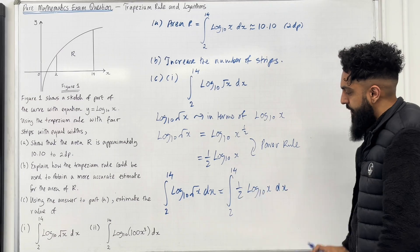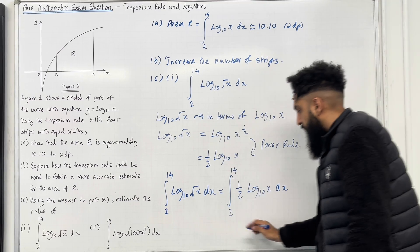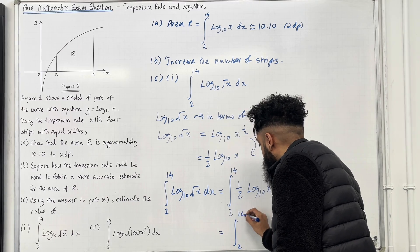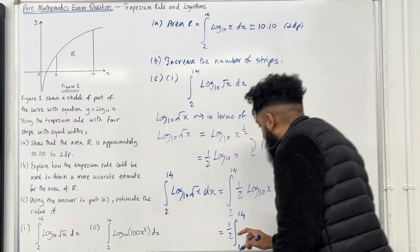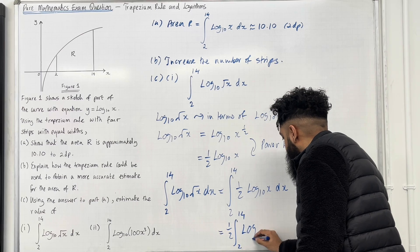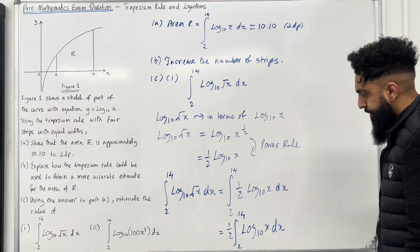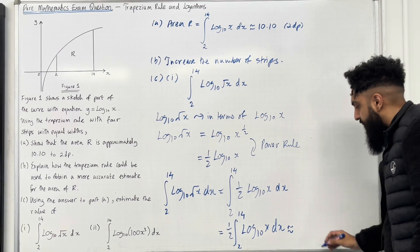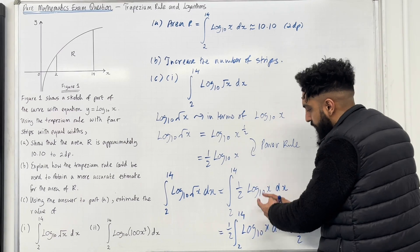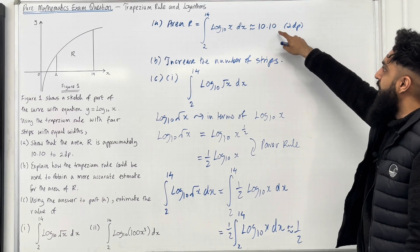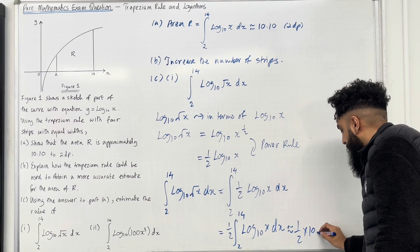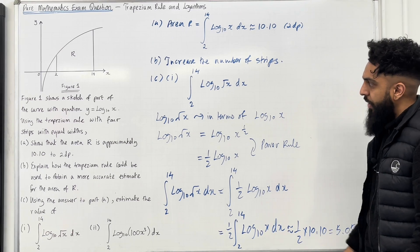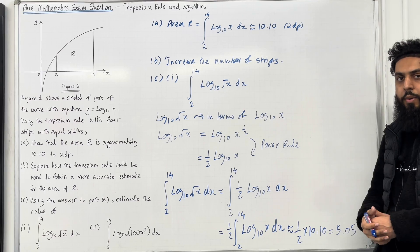Now we can take out the constant ½ outside the integral. So this is approximately equal to ½ multiplied by the estimation from part A, which is 10.10. So ½ times 10.10 gives me 5.05. The answer to part C, part 1 is 5.05.